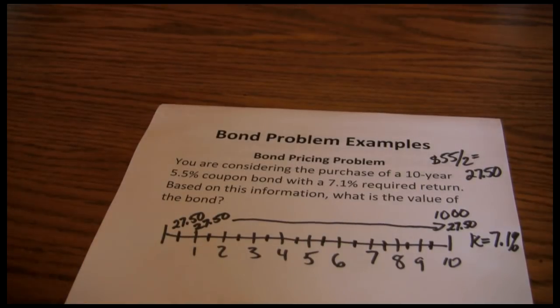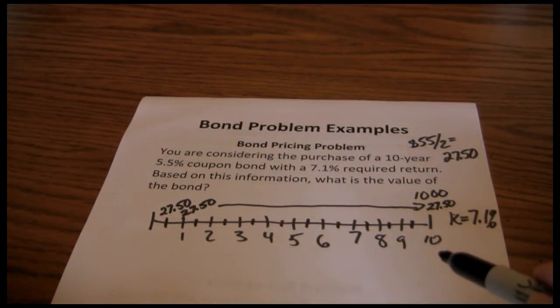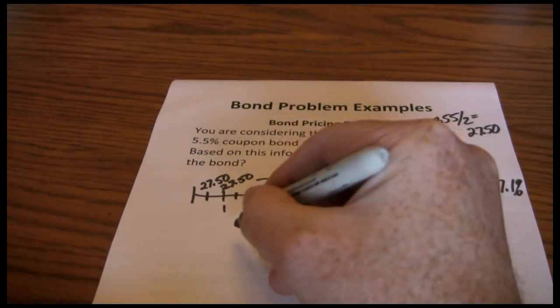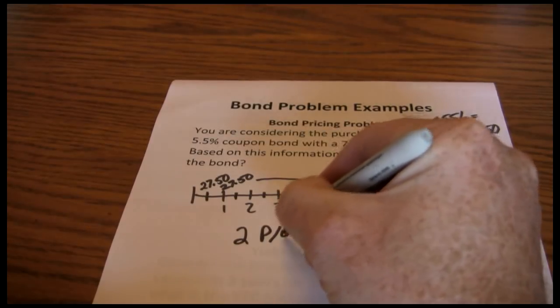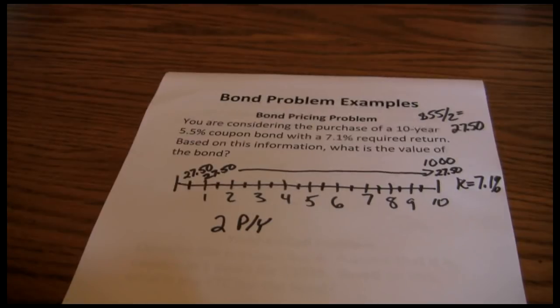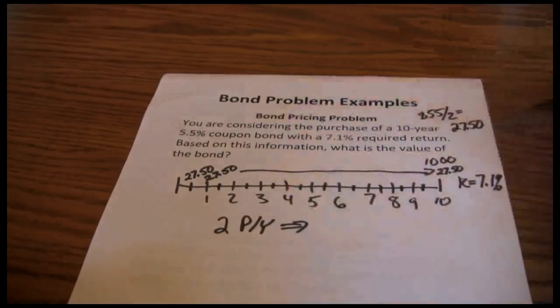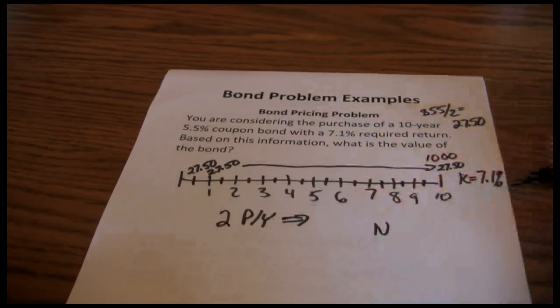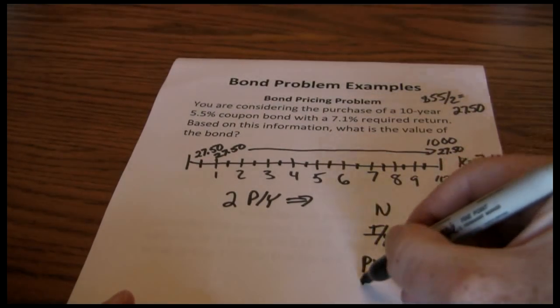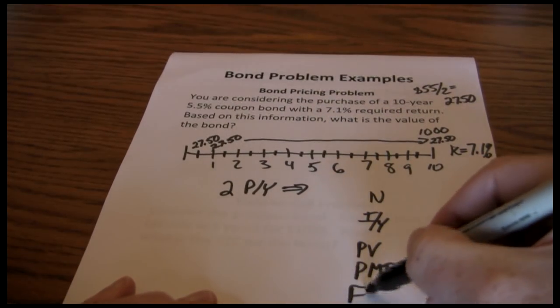Now what we want to do is move from this timeline and set it up into a five-key approach. So we've got our timeline here. We want to convert that to our financial calculator. First thing is because the bond pays semi-annually, we have two periods per year. So you want to set your calculator to two periods per year, and then you can just start with your five-key approach. So once your calculator is set to two periods per year, you have your five keys: N, I/Y, PV, PMT, and FV.